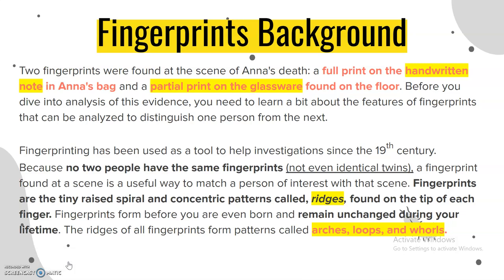Just a little background on fingerprints. Two fingerprints were found at the scene of Anna's death: a full print on the handwritten note in Anna's bag, and a partial print on the glassware found on the floor. Before you dive into analysis of this evidence, you need to learn a bit about the features of fingerprints that can be analyzed to distinguish one person from the next.